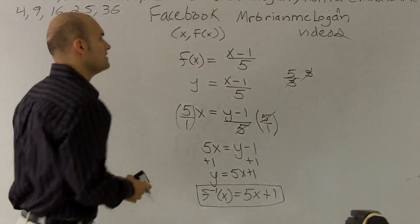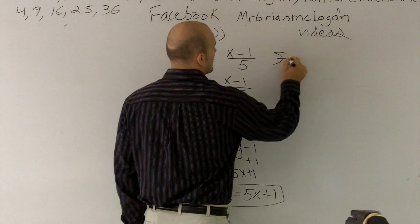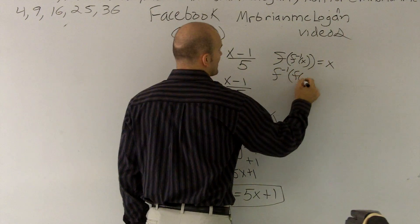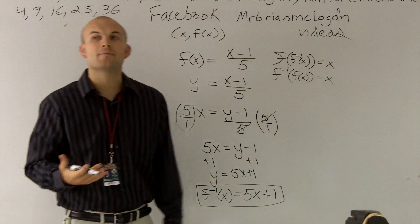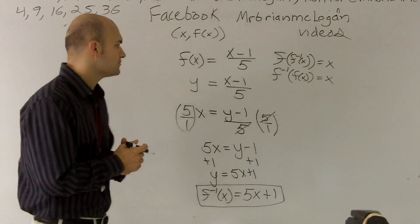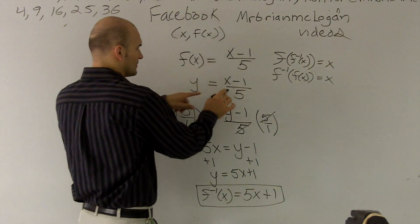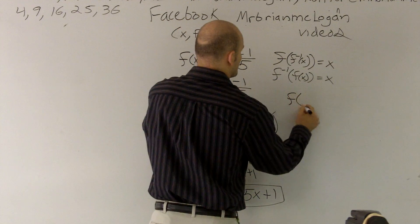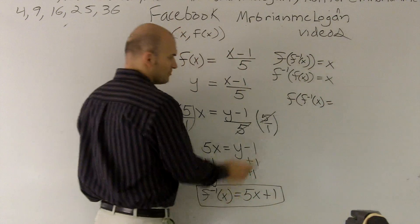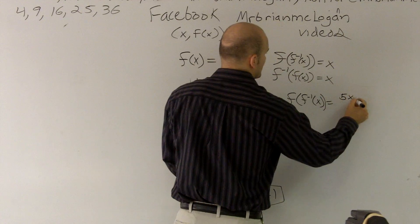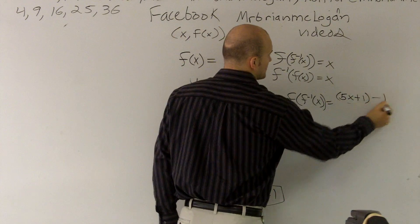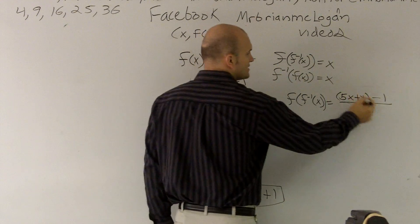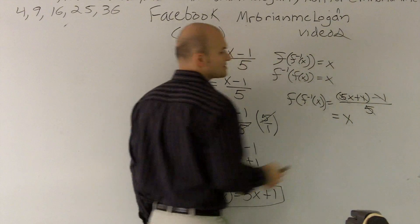The problem also says to verify that those are correct — verify that those functions are inverses of each other. The verification is f of f inverse of x equals x, and f inverse of f of x equals x. We're going to do the composition of f and f inverse and see that they reduce down to x. So I'm going to plug f inverse, which is 5x plus 1, into f of x, which gives me 5x plus 1 minus 1, all over 5. The ones cancel out and the 5s reduce down, so that equals x. It works that way.